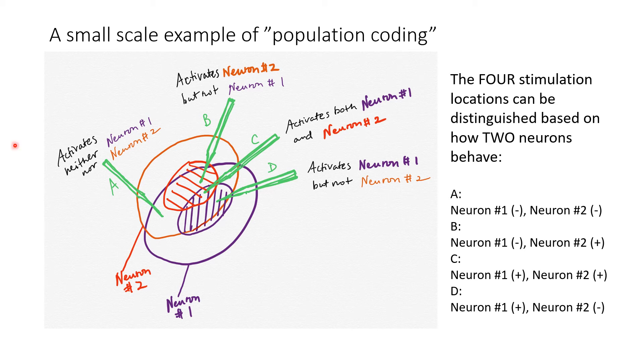Neuron 1 might have an on-center in the off-surround of neuron 2, and vice versa. If you could look at this area carefully, it's like a Venn diagram. You can see sort of where the overlap is and isn't.